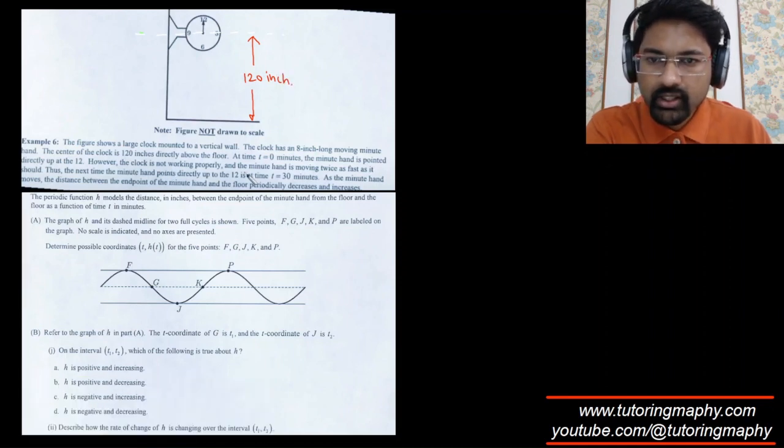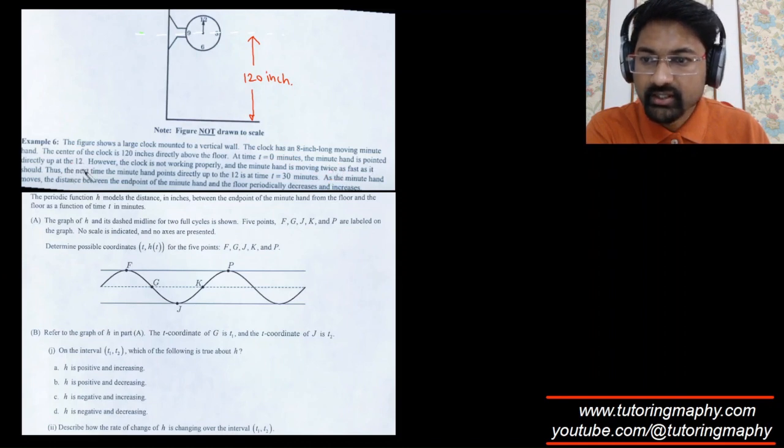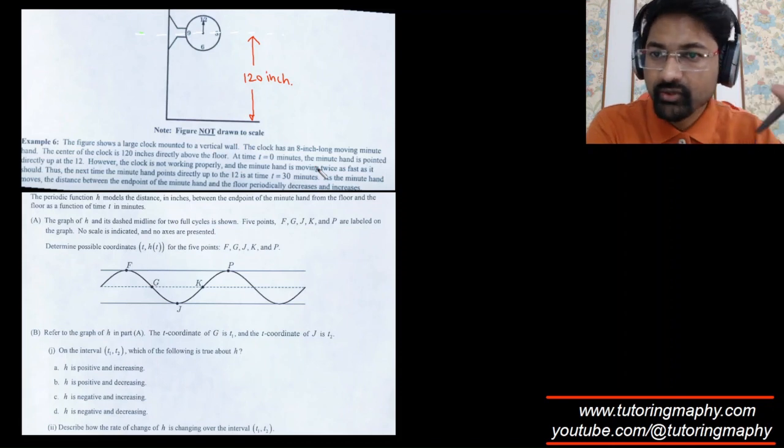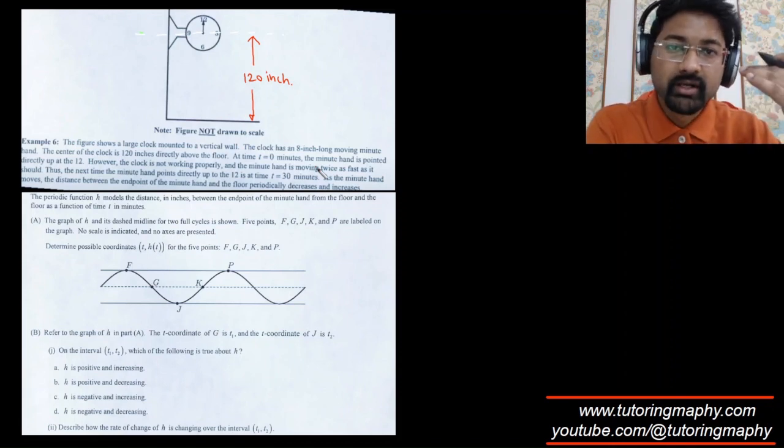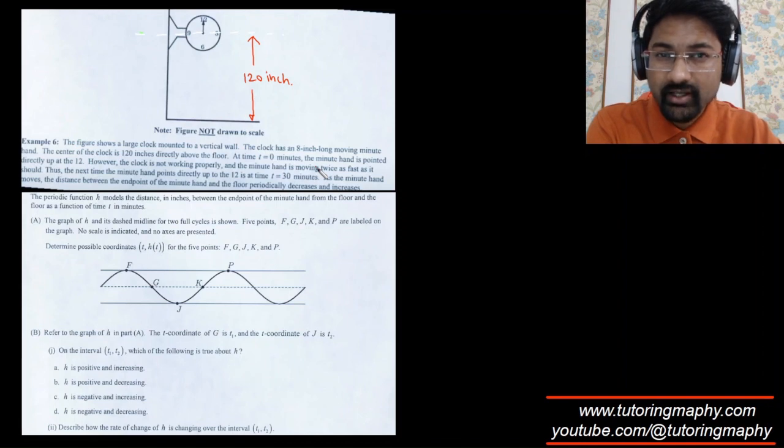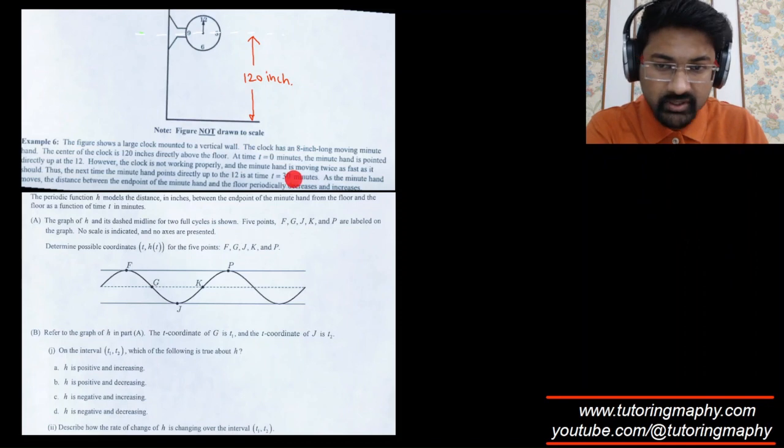At time t equals zero, the minute hand is pointed directly up at 12 o'clock. The clock is not working properly and the minute hand is moving twice as fast as it should. The next time the minute hand points directly up to the 12 mark is at 30 minutes, which makes sense because ideally it would come at the same position after 60 minutes. But since it's moving twice as fast, it's going to take half the time.